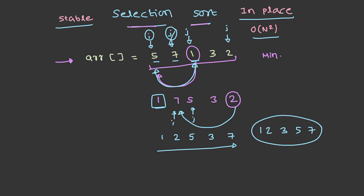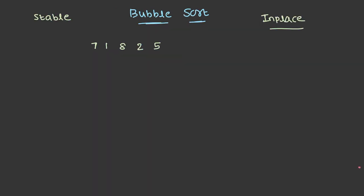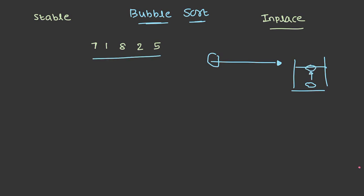Let's try to understand the bubble sort algorithm. The name bubble sort comes from the idea that the element which needs to reach the top position starts like a bubble and travels to its destination. Just as a bubble generated at the bottom of water propagates to the surface, in this array the element that is greater moves to the right, and at the end of a complete iteration, the largest element floats to the final position.